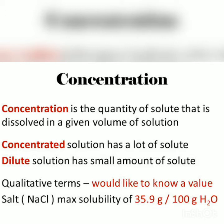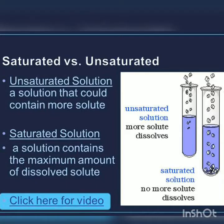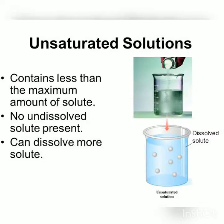On the basis of the concentration of solute present in the solution, a solution can be classified as two types: unsaturated and saturated. An unsaturated solution is one in which we can add more and more solute particles and they completely dissolve. As soon as we add more solute particles, they become completely dissolved in the solvent. This kind of solution in which we can keep adding more solute is regarded as an unsaturated solution.